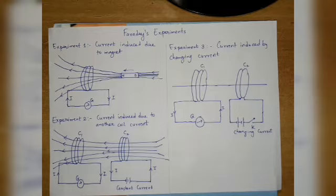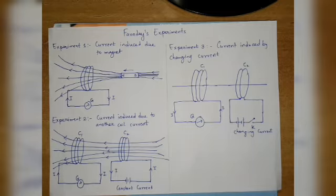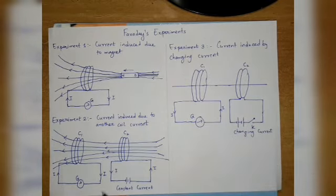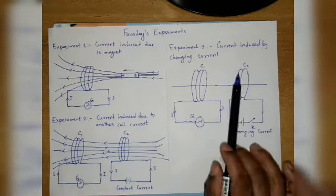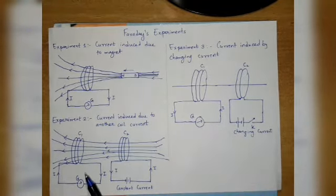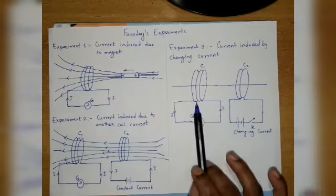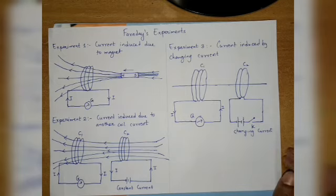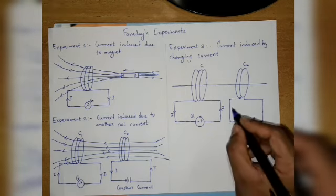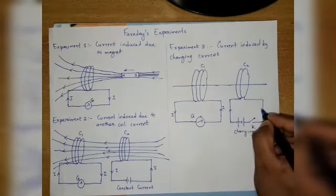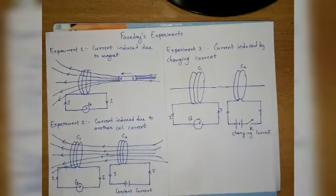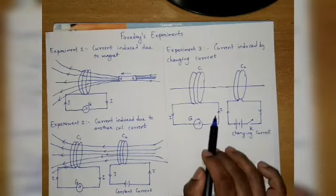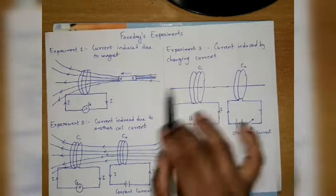This is relative motion between the two coils. Now we have the third experiment: current induced by changing current. Here we are not supposed to move the coils. We are going to change only the current of one circuit, and by that, we produce a current in the second circuit. You understand why this is...